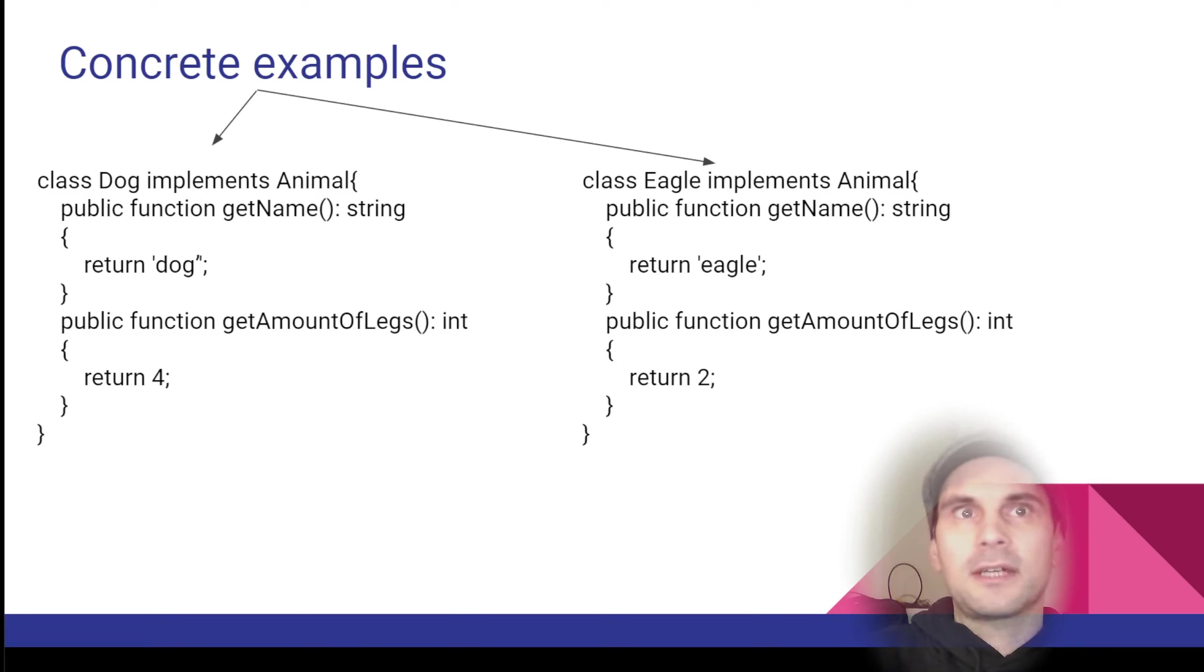In this case, it looks kind of repetitive. See, and there's a typo here, so please ignore that. So we have the function getName and getAmountOfLegs. So both are methods that both implement.